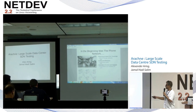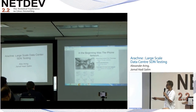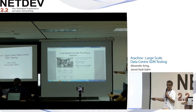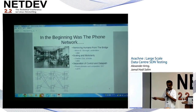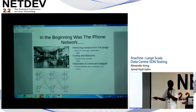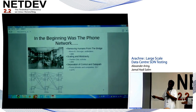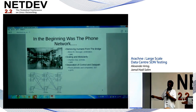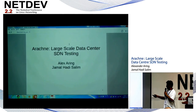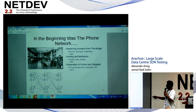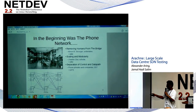Then around 1892, this dude Almond Strowger found out that one of these ladies was married to another undertaker, and she was routing calls whenever anybody called for an undertaker to her husband's business. So he got pissed off. I don't know how many people were dying at that time in Rochester, New York. But the automated switch got created at that time — humans were replaced.